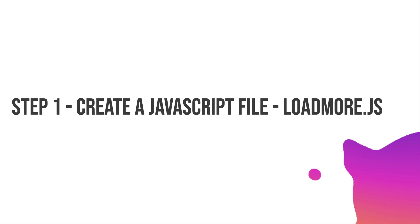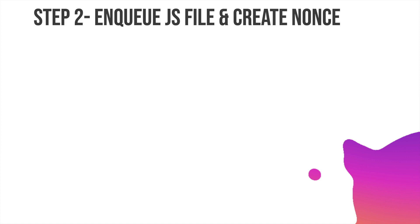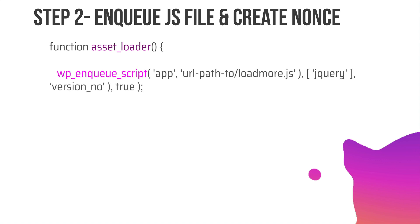Step one is to create a JavaScript file. We'll actually code it, but let's first understand the basic concept. We create a JavaScript file called load-more.js, then we enqueue that JavaScript file and create a nonce. We create a custom function — I'm naming it 'asset loader' — then we use wp_enqueue_script to enqueue our JavaScript, putting the path to our load-more.js file with jQuery as a dependency, which is already provided by WordPress. We also put the version number, and then we use wp_localize_script.